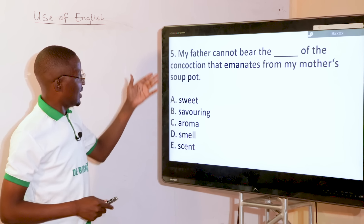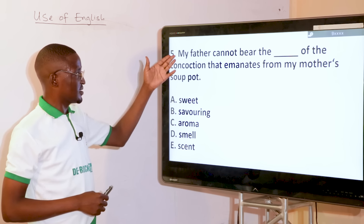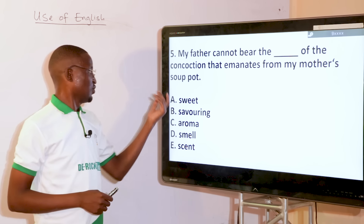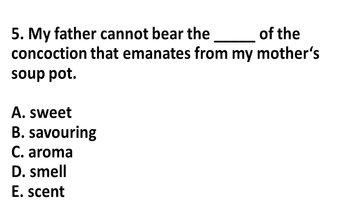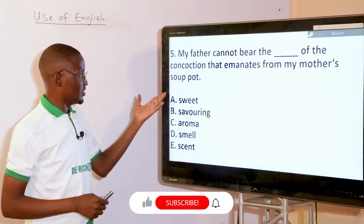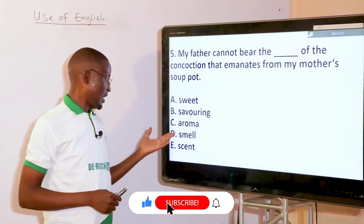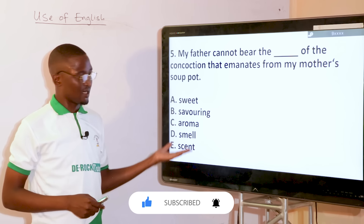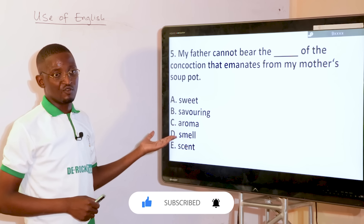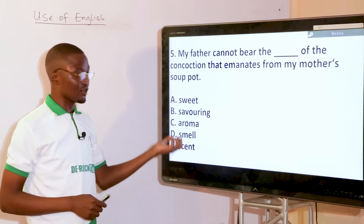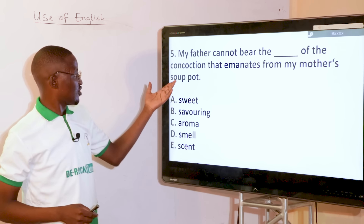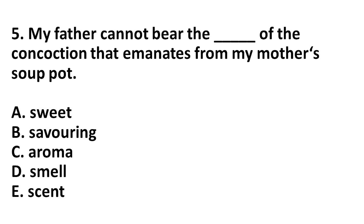My father cannot bear the dash of the concussion that emanates from my mother's soup. We are talking about the right choice of words — words that align with the field of food and soup. The options are sweet, savouring, aroma, smell, scent. Aroma, smell, and scents all relate to smells, but since we are talking about food — specifically a concussion from the soup — we choose aroma, option C.